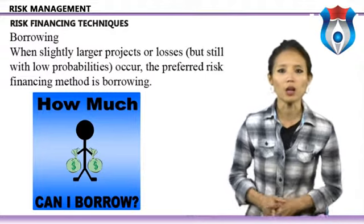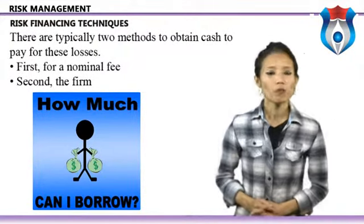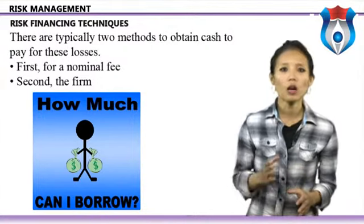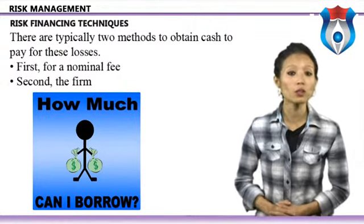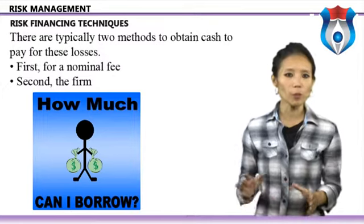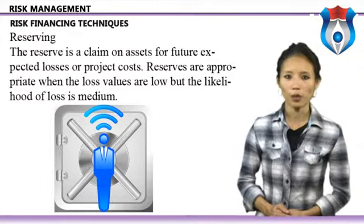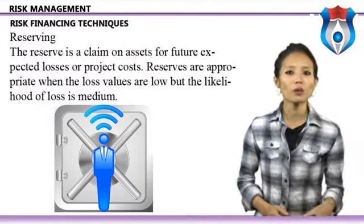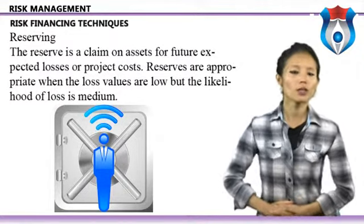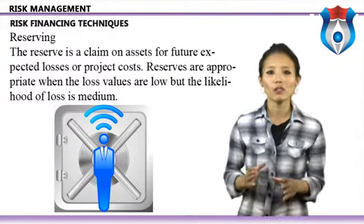For borrowing, there are typically two methods: first, the firm can obtain a letter of credit from a bank for a nominal fee, promising to provide cash if certain contingencies occur; second, the firm can issue bonds to obtain cash to rebuild a building or finance other assets. Reserving involves a claim on assets for future expected losses. To set up a reserve, the firm places an appropriate amount — usually the expected value of loss plus a multiple of the standard deviation — on the balance sheet.